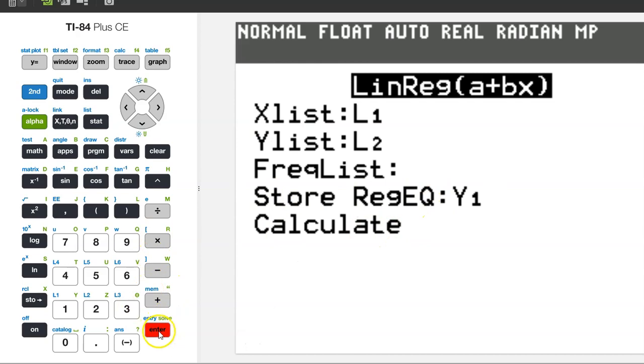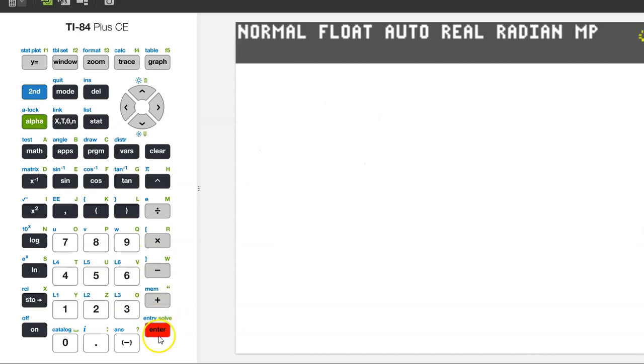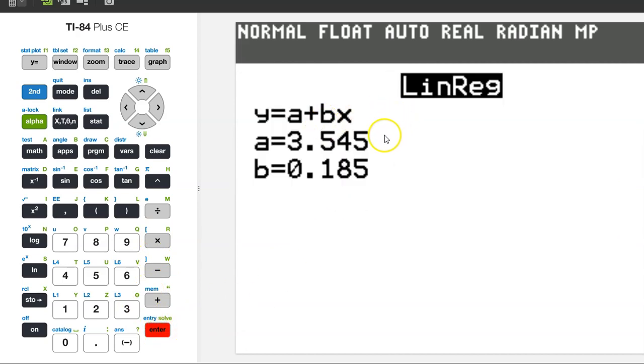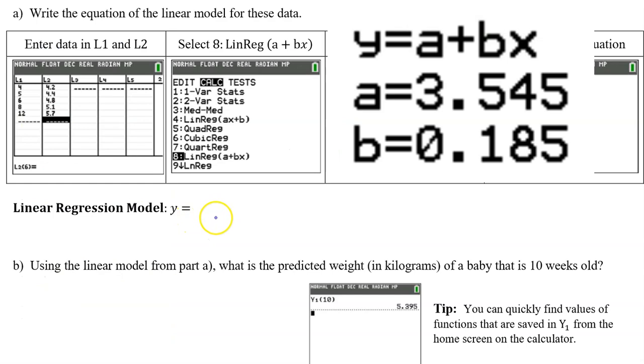Now hit enter, and again, and here is our regression equation. To write your regression model, just plug in your a value and your b value. So we have y equals 3.545 plus 0.185x.